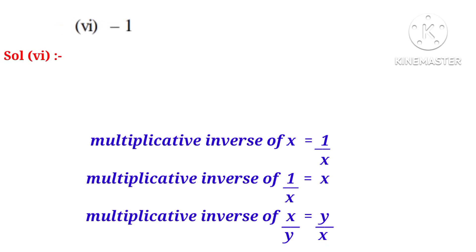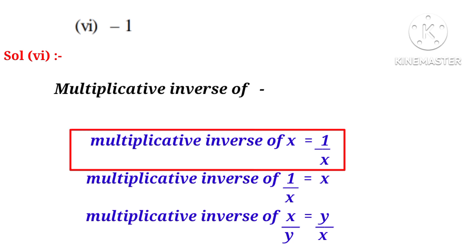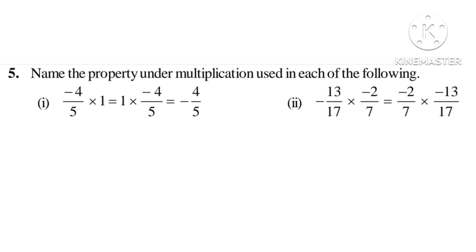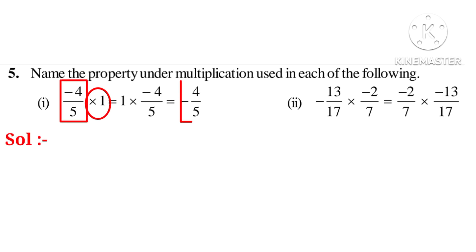Solution 6: multiplicative inverse of minus 1 is 1 by minus 1, which is also equal to minus 1. Now let us do the fifth problem: name the property under multiplication used in each of the following. By multiplying with 1, the fraction minus 4 by 5 does not change its value or identity. So it is called the identity property.